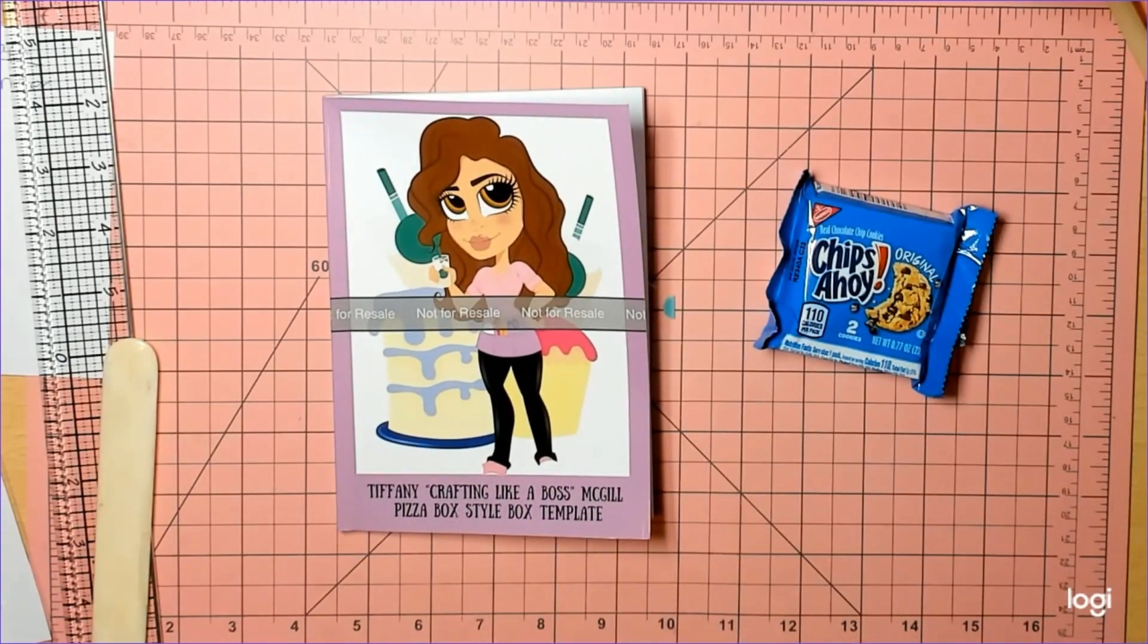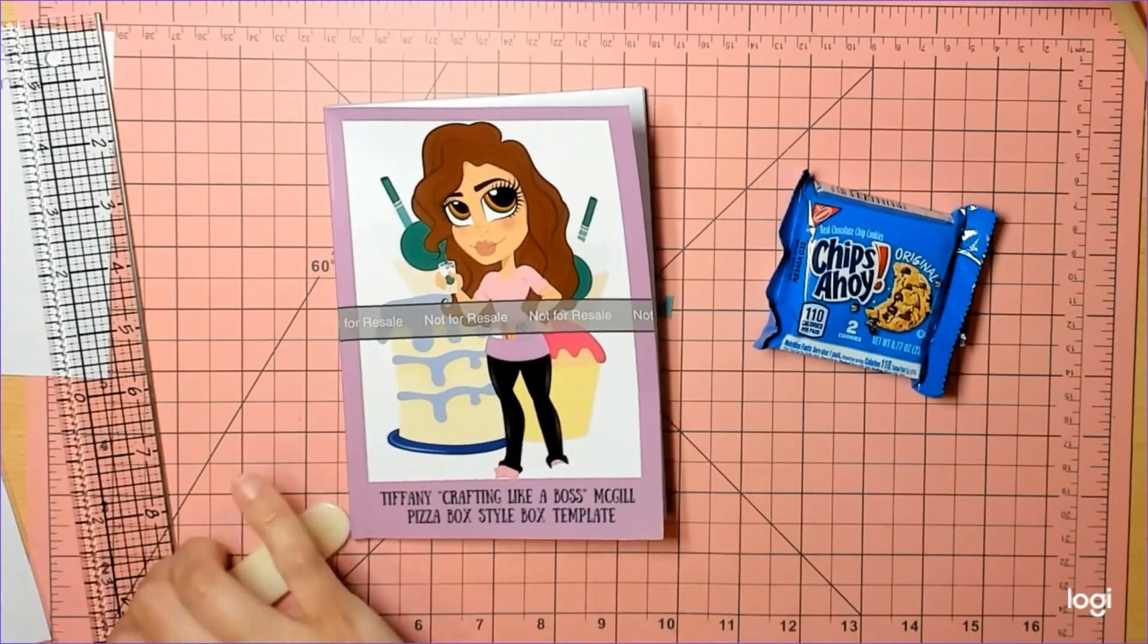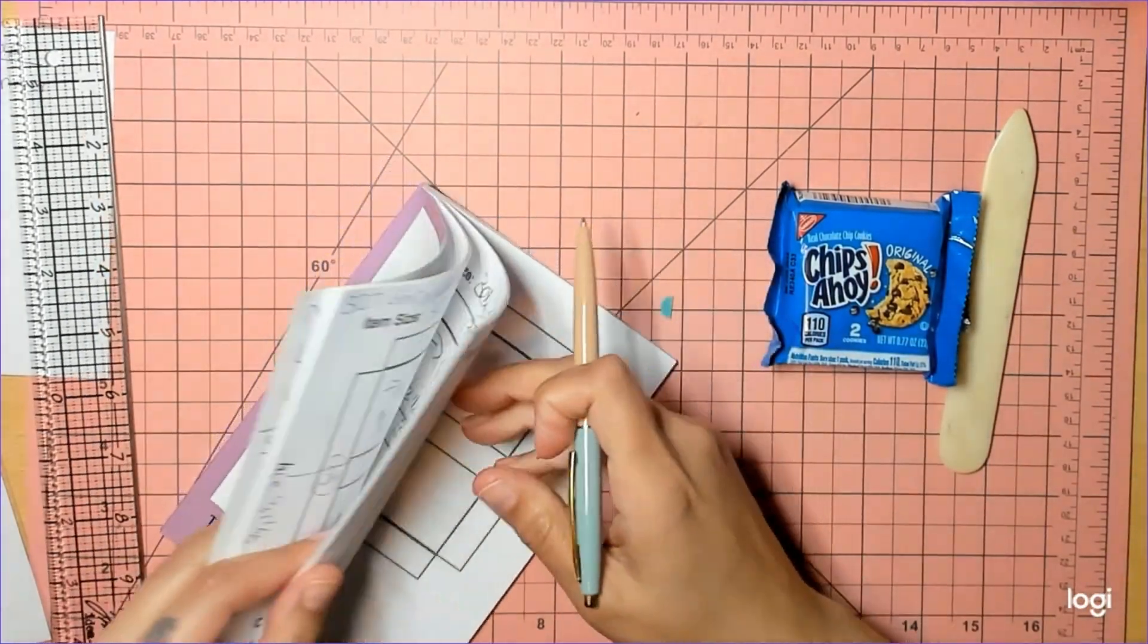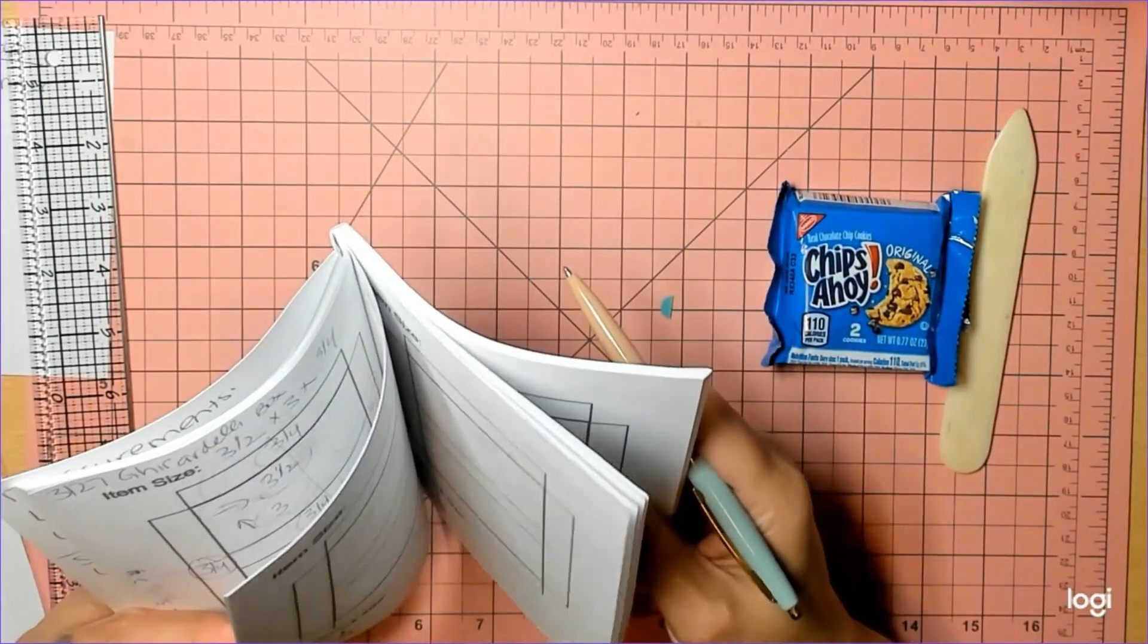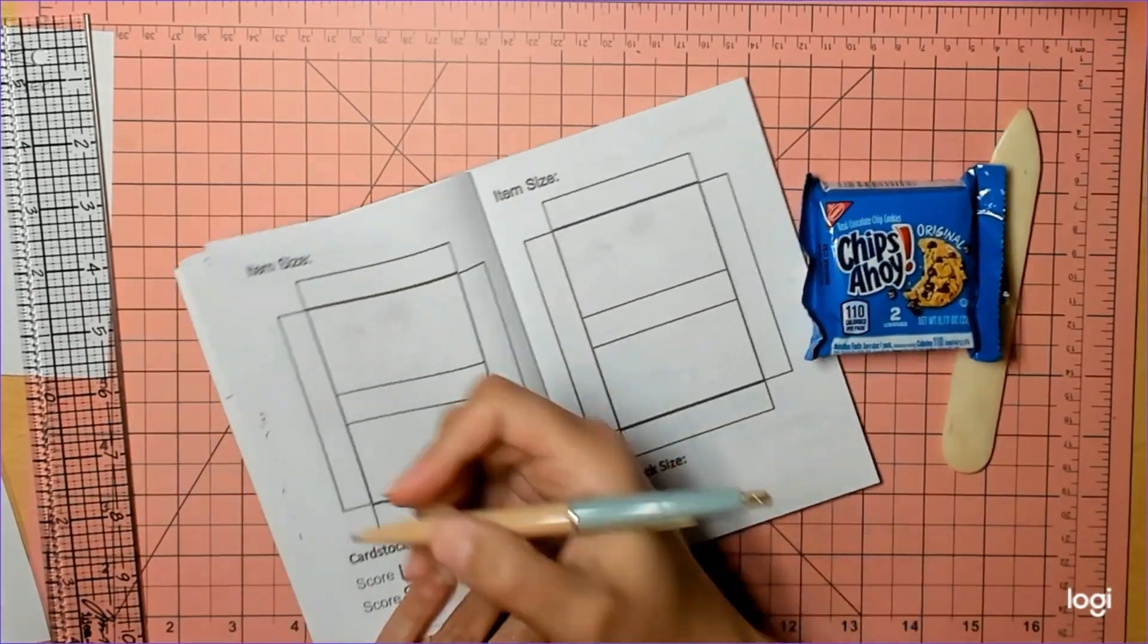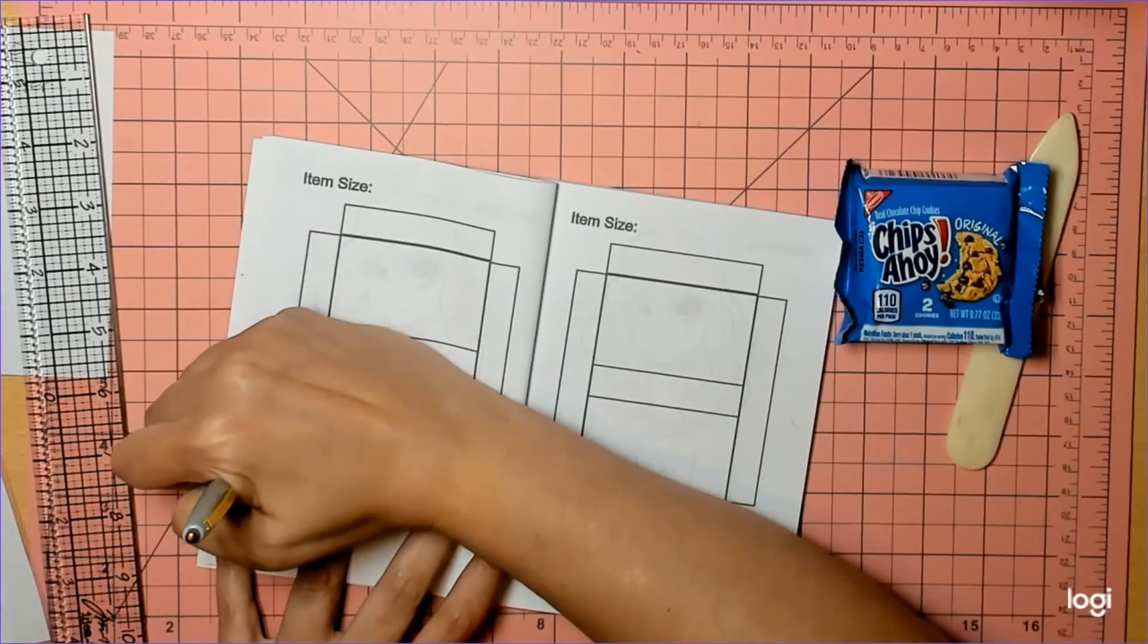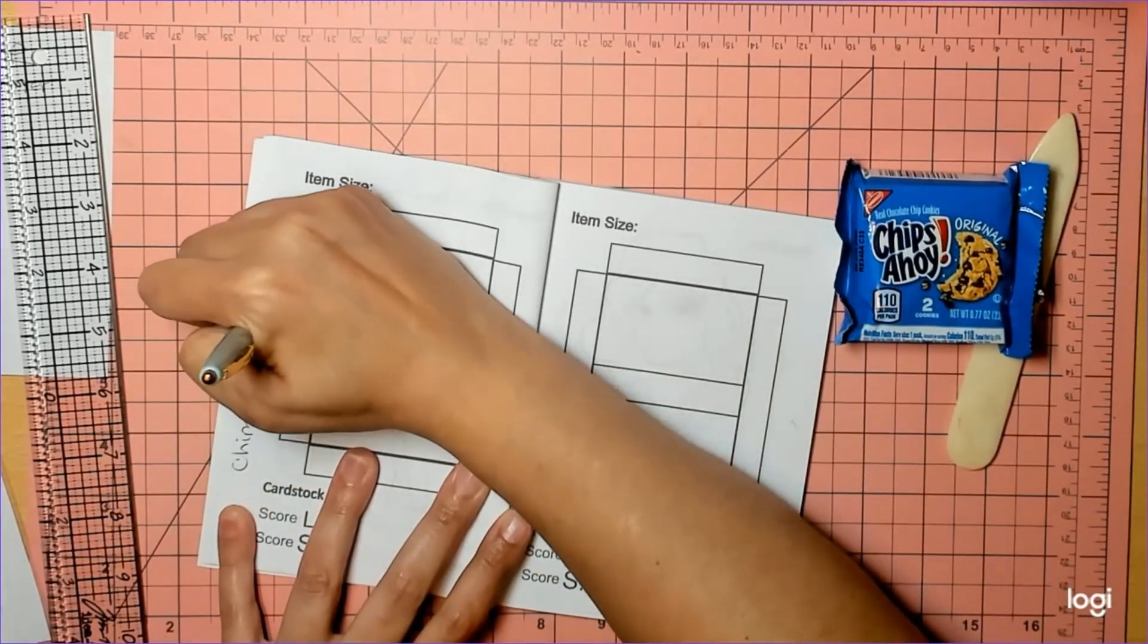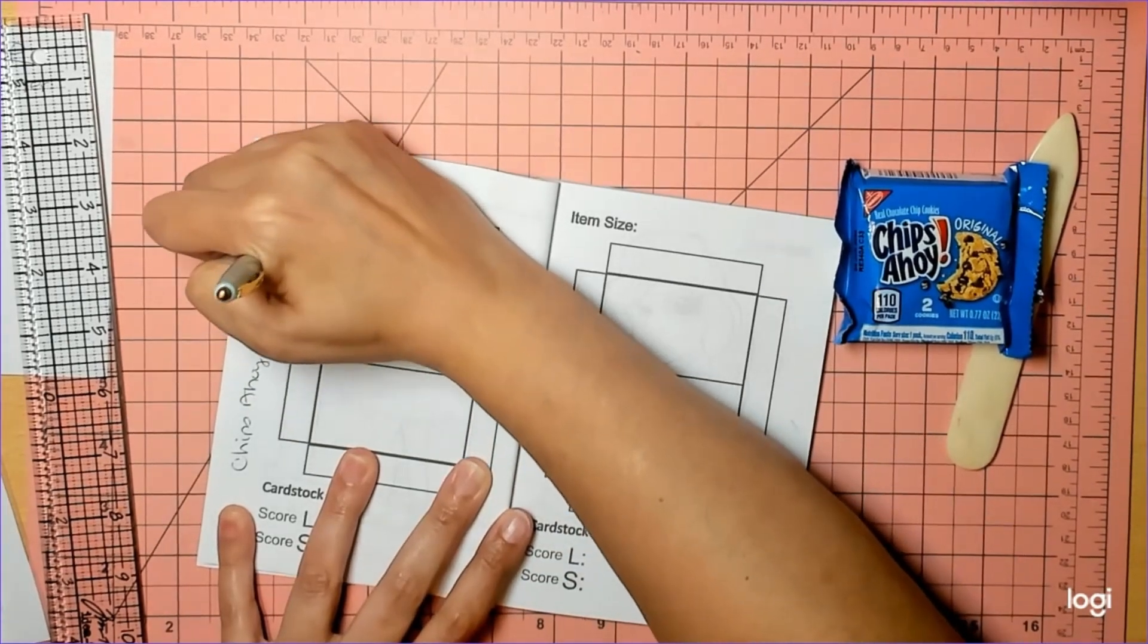We're going to do a pizza box style box. Go ahead and grab your purple book and a pen, and we are going to find a blank page.